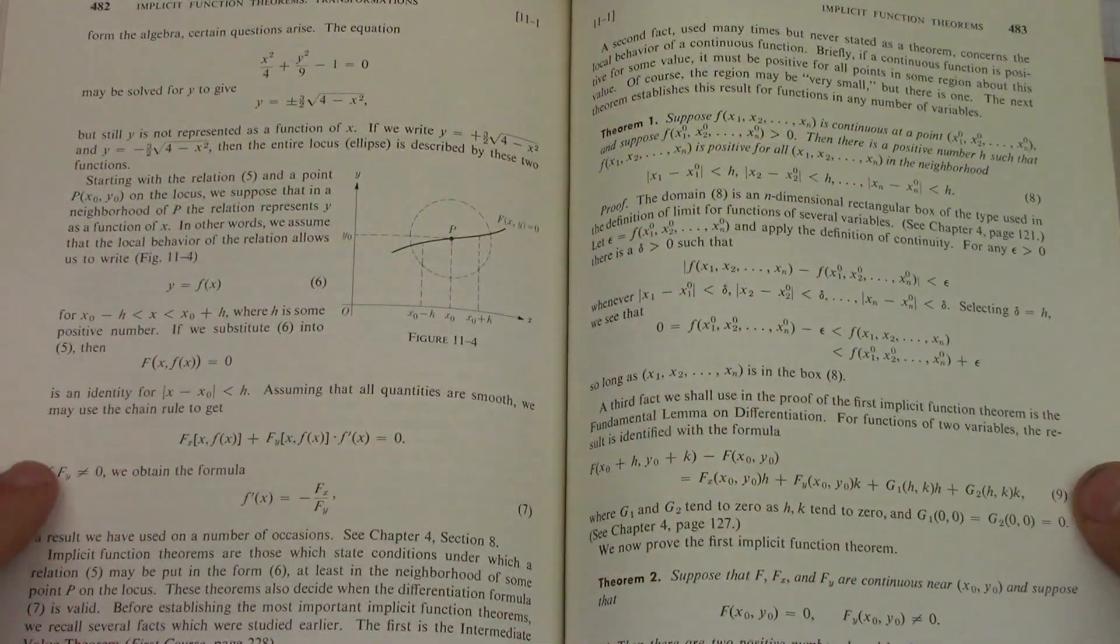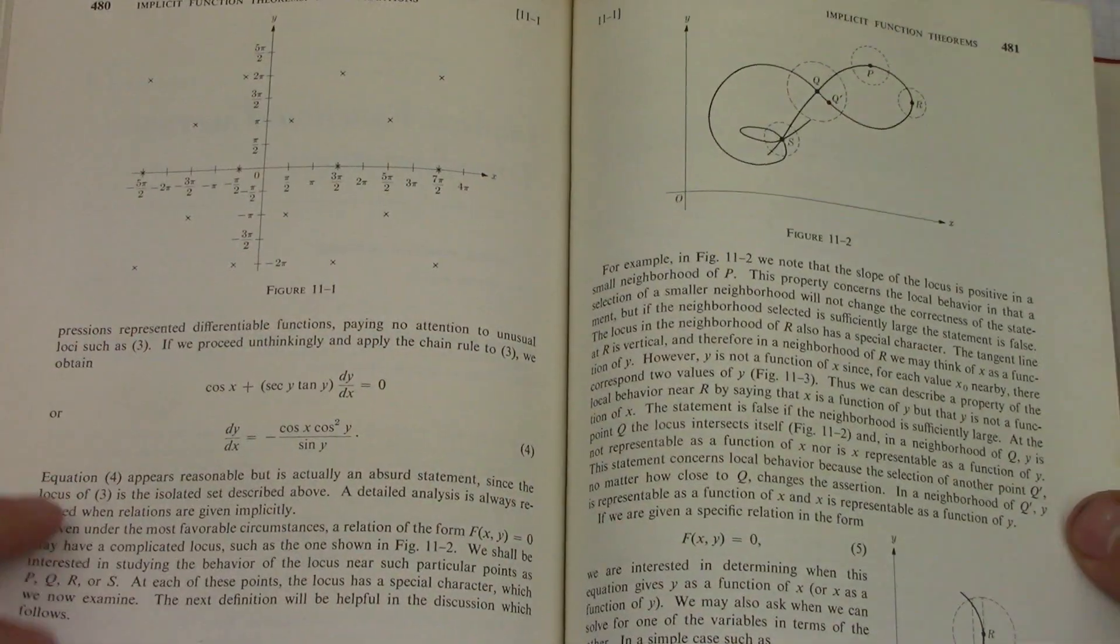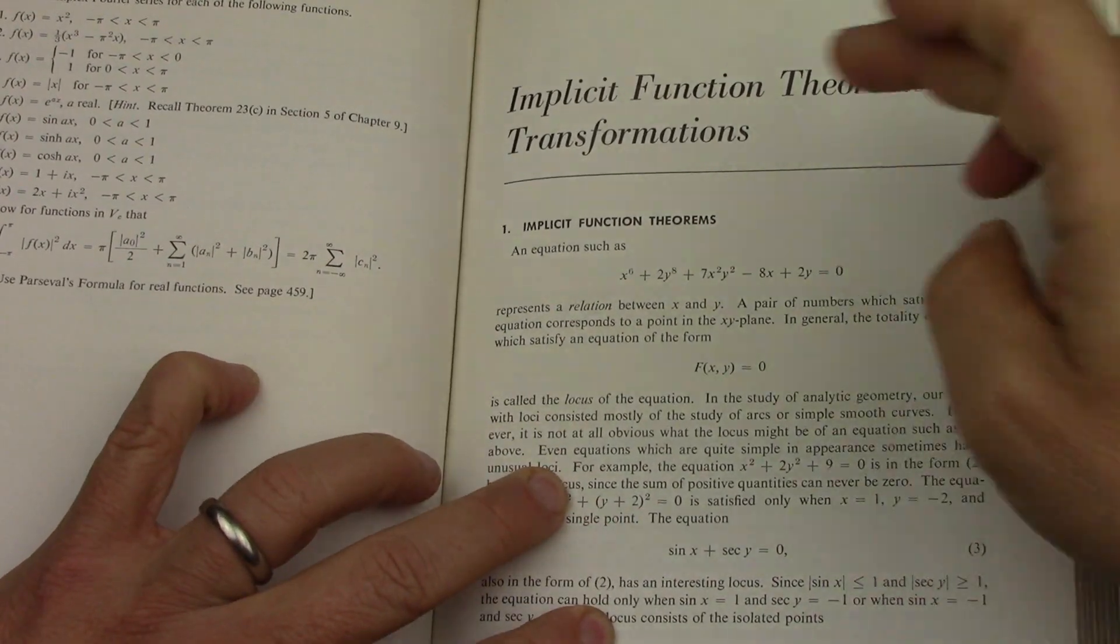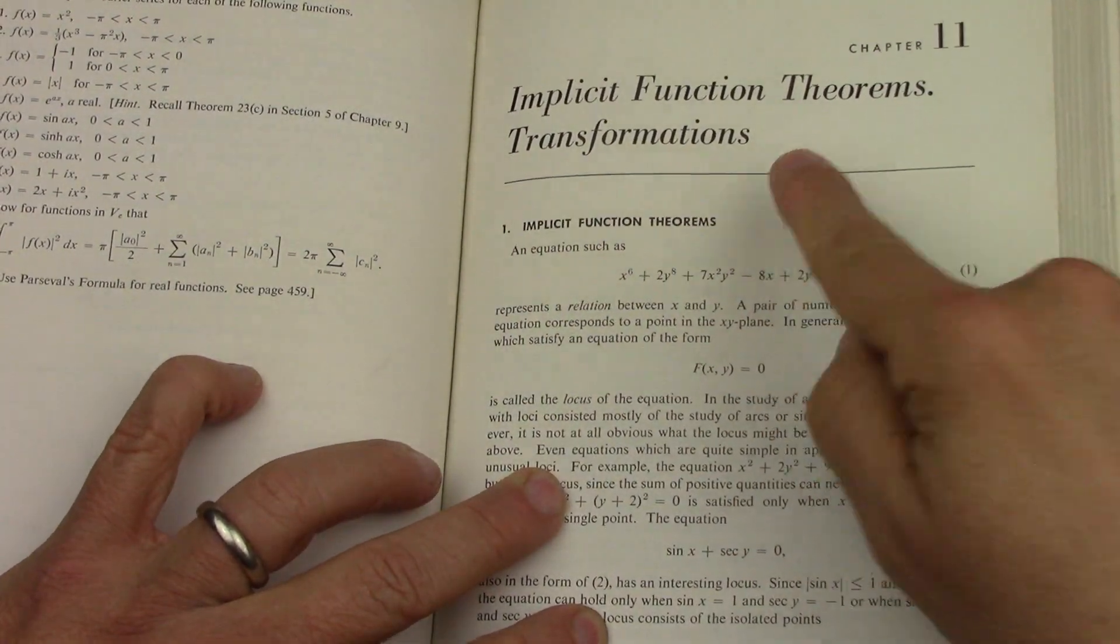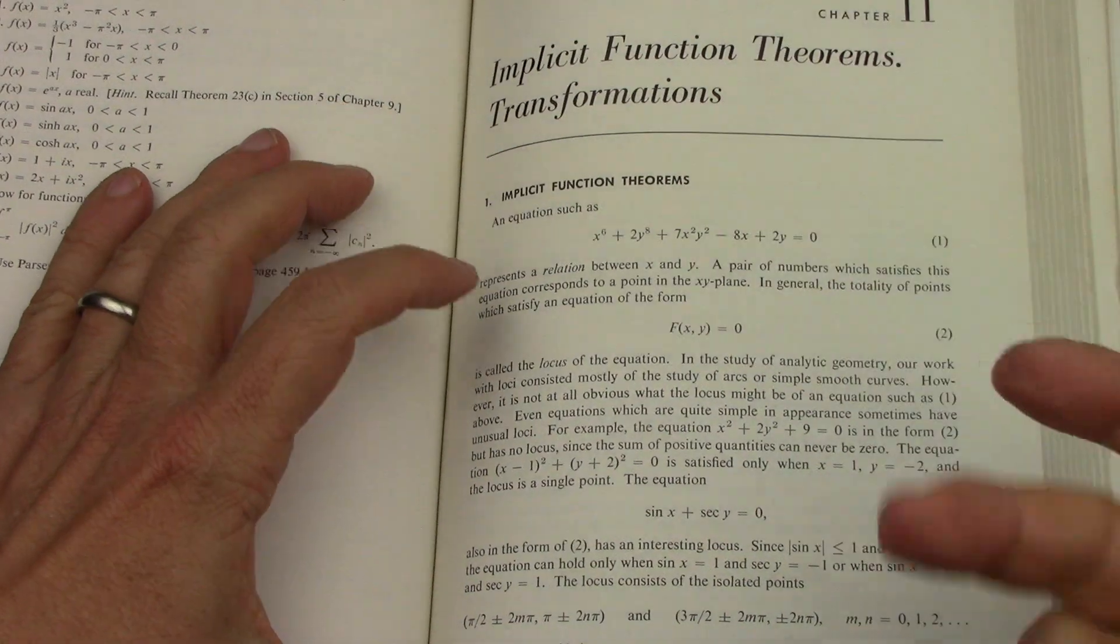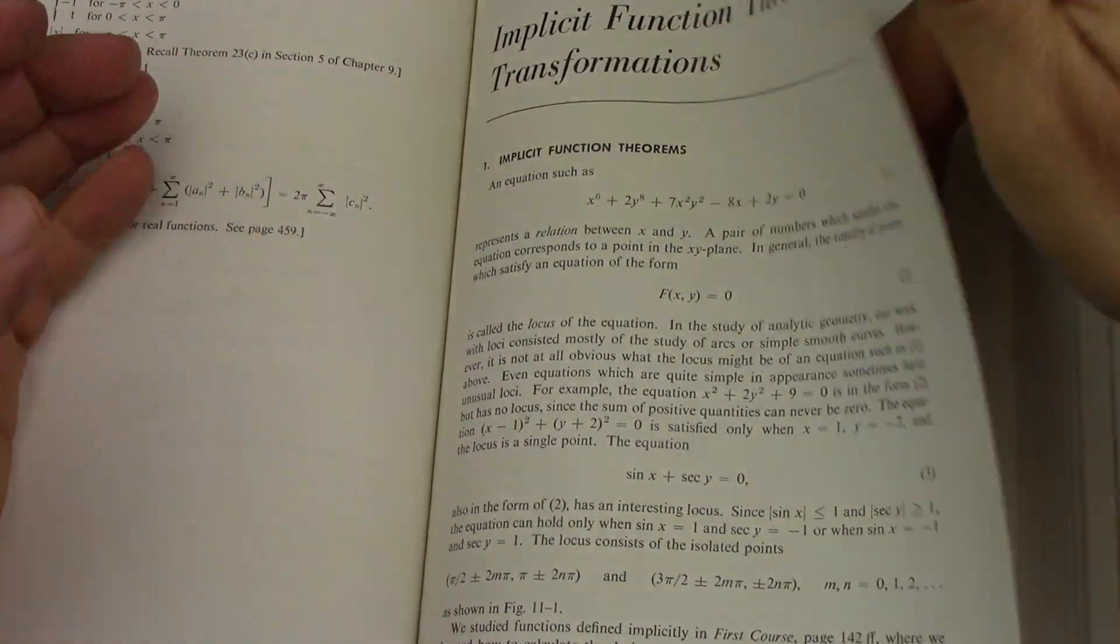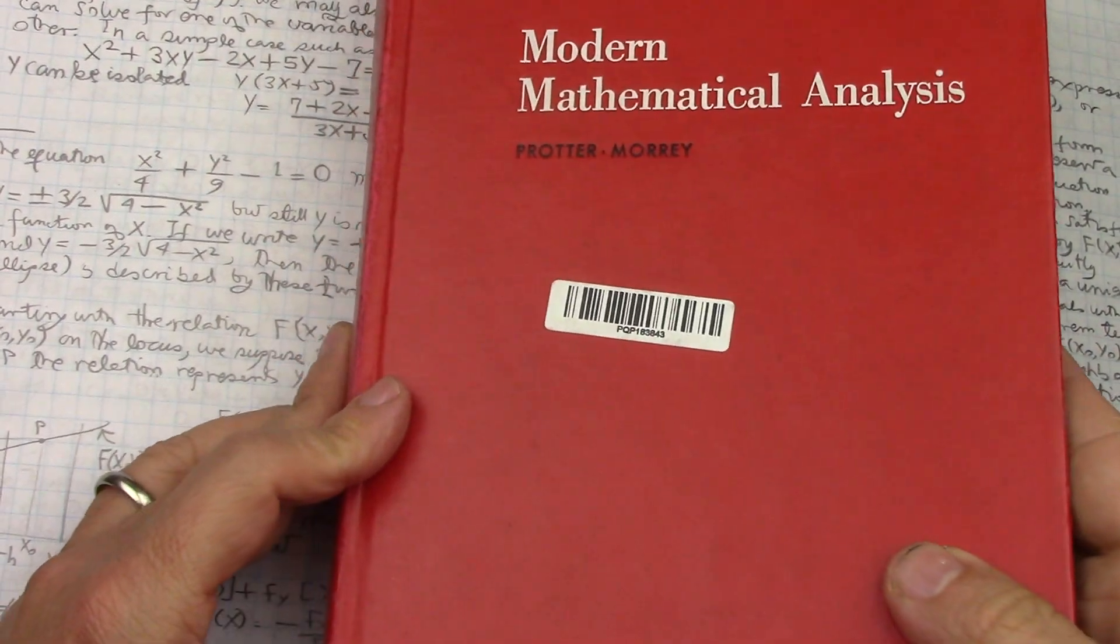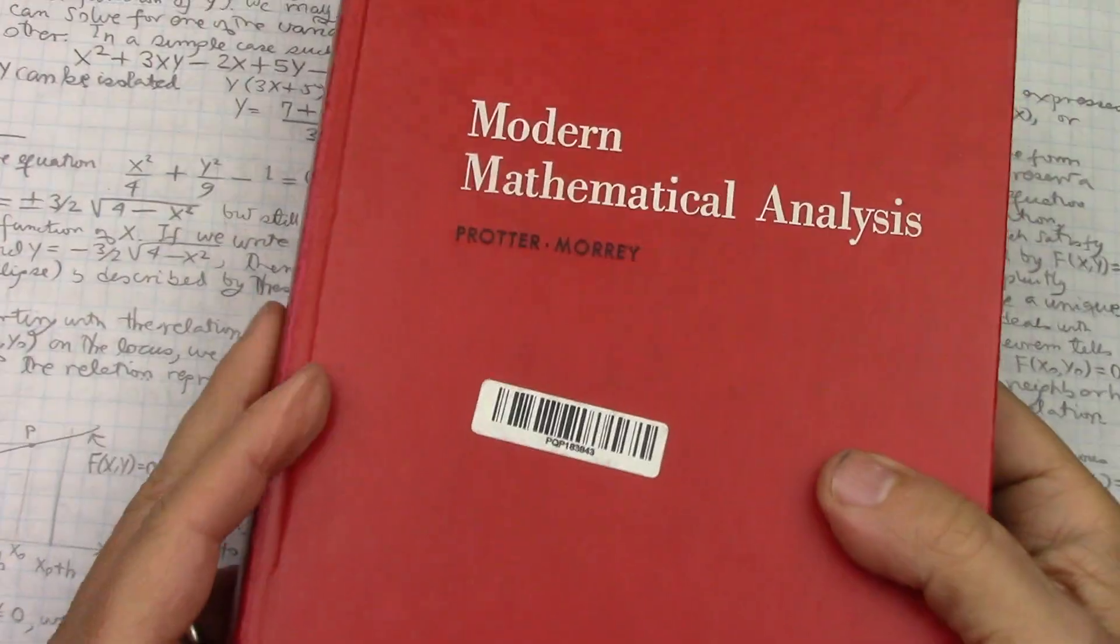It's much better to read it in this original form. He's got a whole mini-chapter titled Implicit Function Theorems and Transformations, because the inverse function theorem also comes in and they're sort of like a twofer.